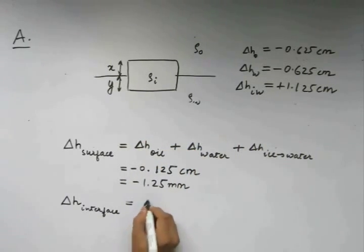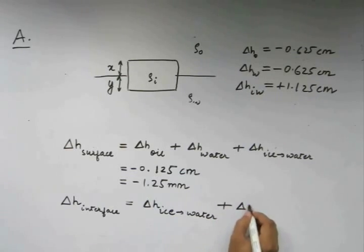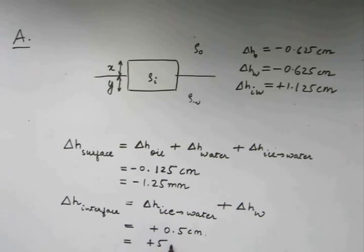So this is going to be equal to ΔH_ice-water and the ΔH of water which is nothing but plus 0.5 centimeters. This is also equal to plus 5 millimeters.